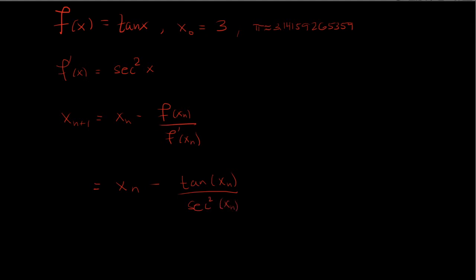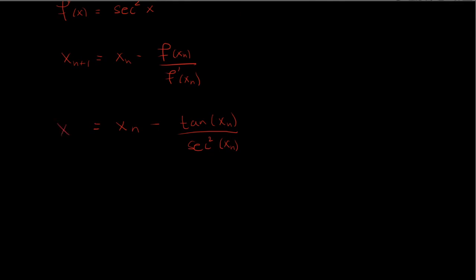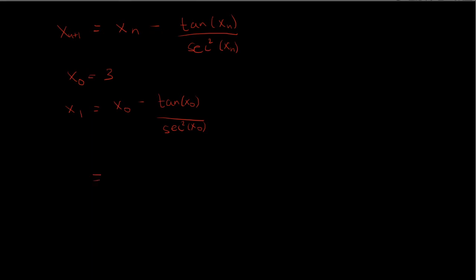We're starting with x₀ being 3 so x₁ is x₀ minus tangent of x₀ over secant squared of x₀. Okay x₀ we said is 3 minus tangent of 3 over secant squared of 3. If we enter that in the calculator we get about 3.13971 so pi is about 3.14159 so it's pretty close.